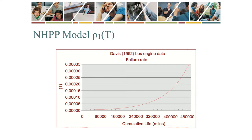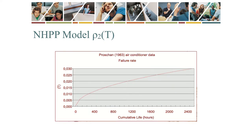The graph shown was one of the outputs of the master's degree study of Jasper Coetzee in 1997. This is an example of Rho2(T) applied to another famous data set — a 1963 analysis by Proschan. Again, the original analysis of 1963 was done using renewal theory and very wrong conclusions were reached. The graph is again from the 1997 master's study of Jasper Coetzee.